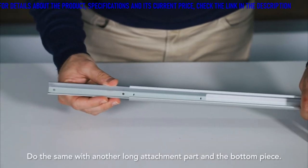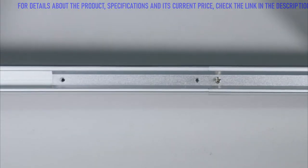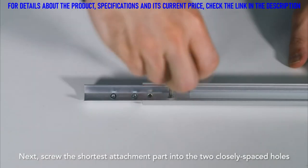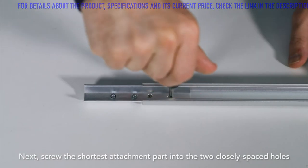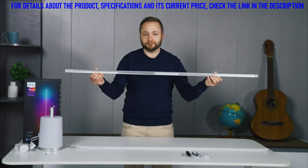Do the same with the other long attachment part and the bottom piece. Next, screw the shortest attachment part into the two closely spaced holes at the end of the bottom piece. Now your lamp pole is ready to be fitted into the base.